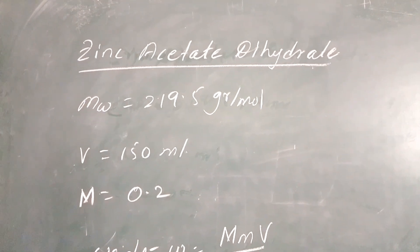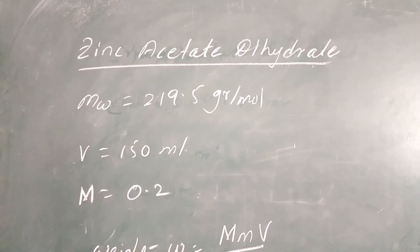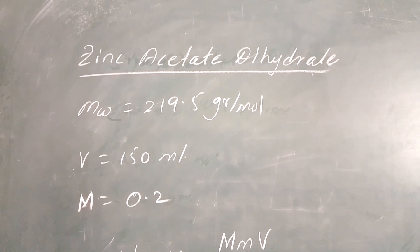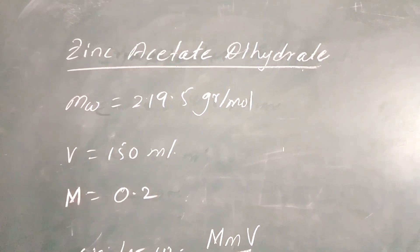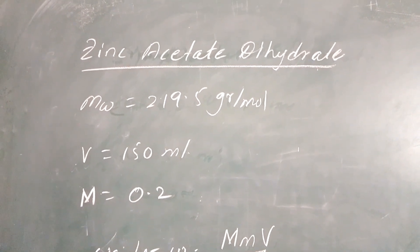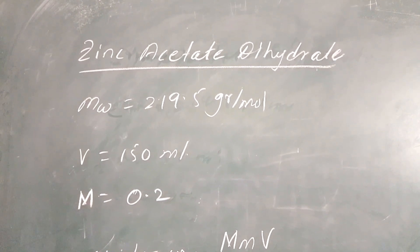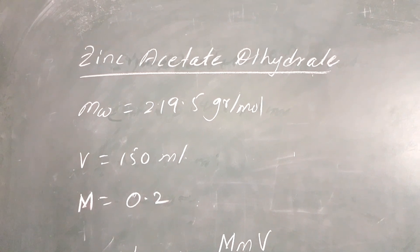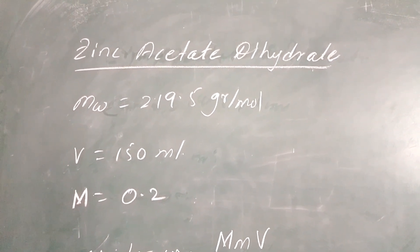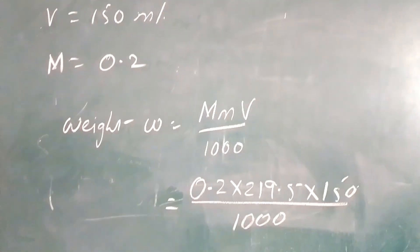I am going to take 150 ml of solvent, which is a combination of 75 ml of methanol and remaining 75 ml of 2-methoxyethanol. I am going to prepare the zinc complex solution with a concentration of 0.2 molarity.